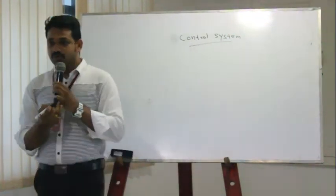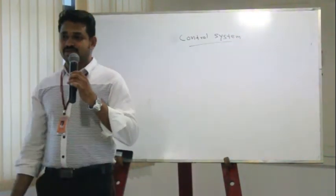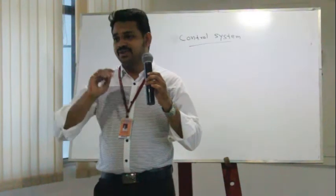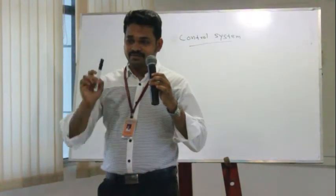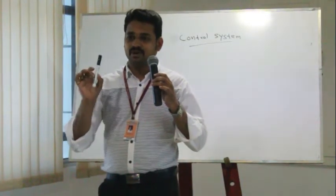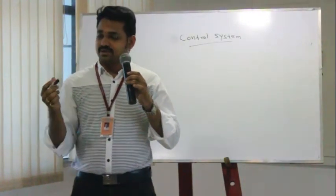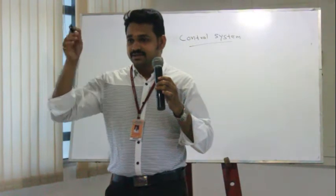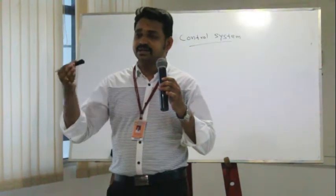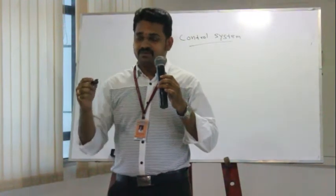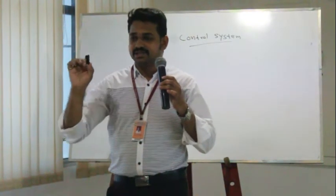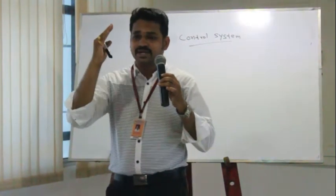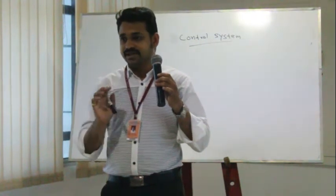Before that, we need to know about the system. What is a system? The system consists of a number of elements or components connected in sequence for a particular function. That is called a system. For example, take this panel — this is a simple system. It has a number of elements connected to specific elements for a particular function. That is called a simple system.